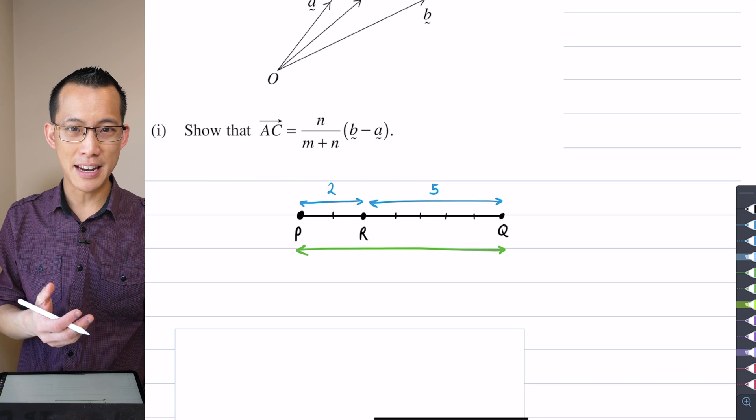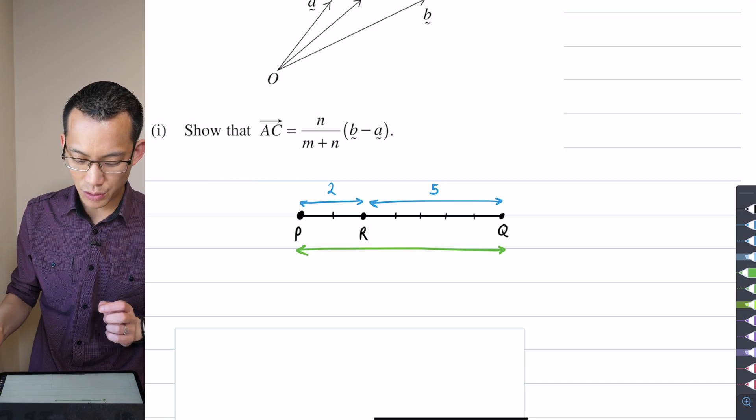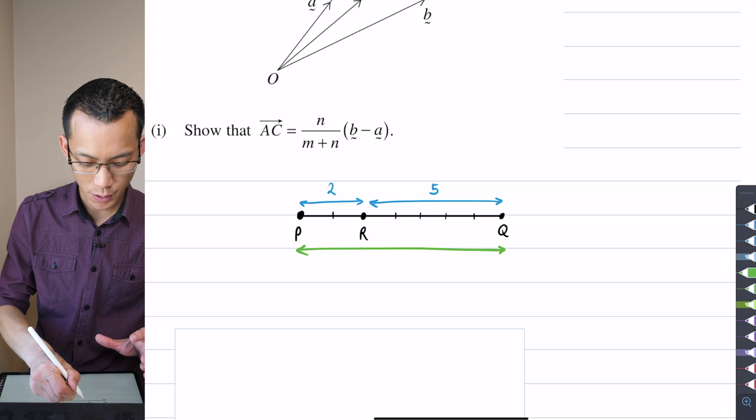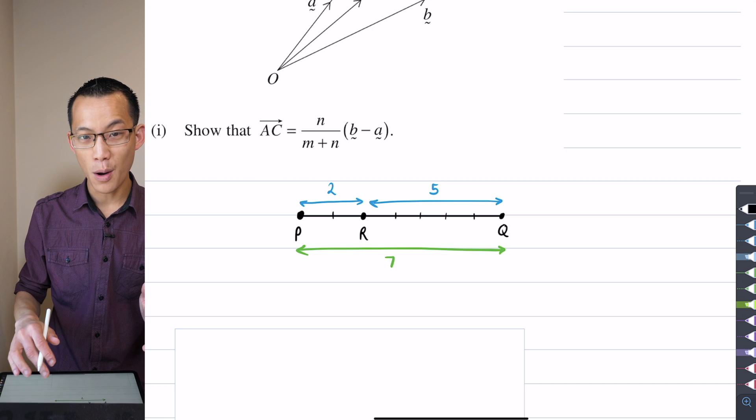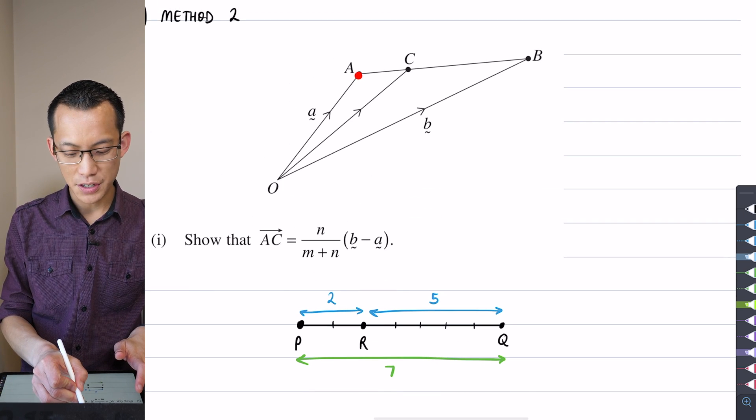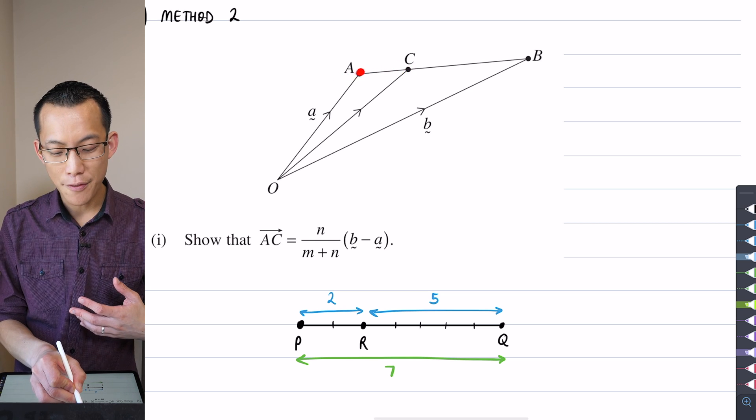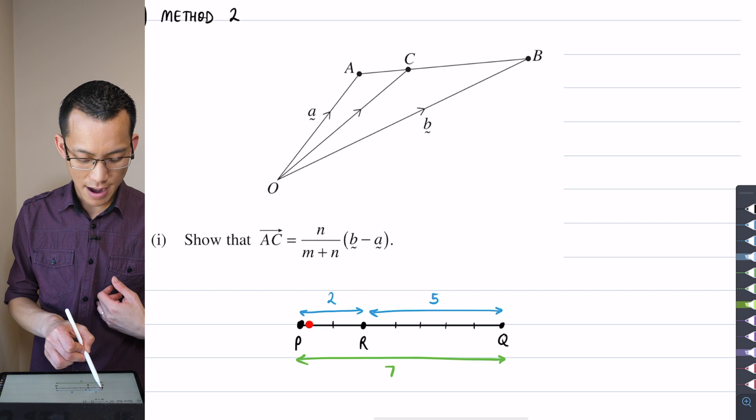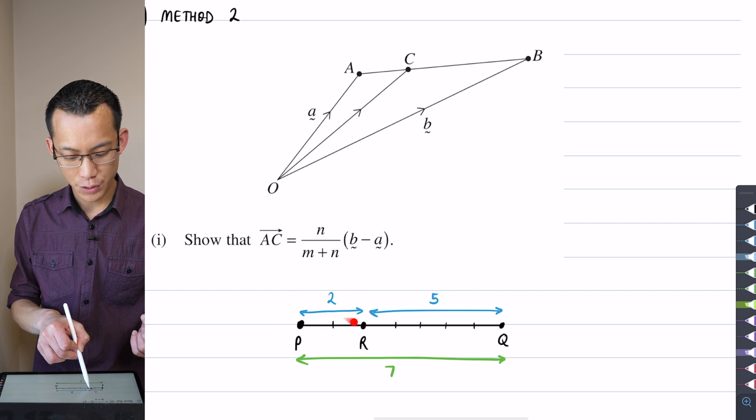So the first thing you can all see is that if I've broken this up in the ratio of 2 to 5, what that tells you is that the whole thing there is going to represent 7 units of some kind. Now the reason why that's helpful is because you can then state—you can see here AC is from the start sort of to that, well it's not midway, it's not a midpoint, but however far along C is.